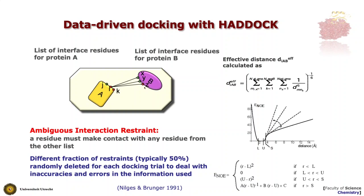The surface neighbors are defined as passive residues, and the ones that you know should really be at the interface are defined as active. Active residues must be at the interface, otherwise some energy will be generated. The passive residues — the green ones — can be at the interface, but if they are not, there is no penalty. Now, to define distance restraints between multiple points, we calculate all pairwise interactions between all atoms of one residue on protein A and all atoms of all the active and passive residues on the other side.